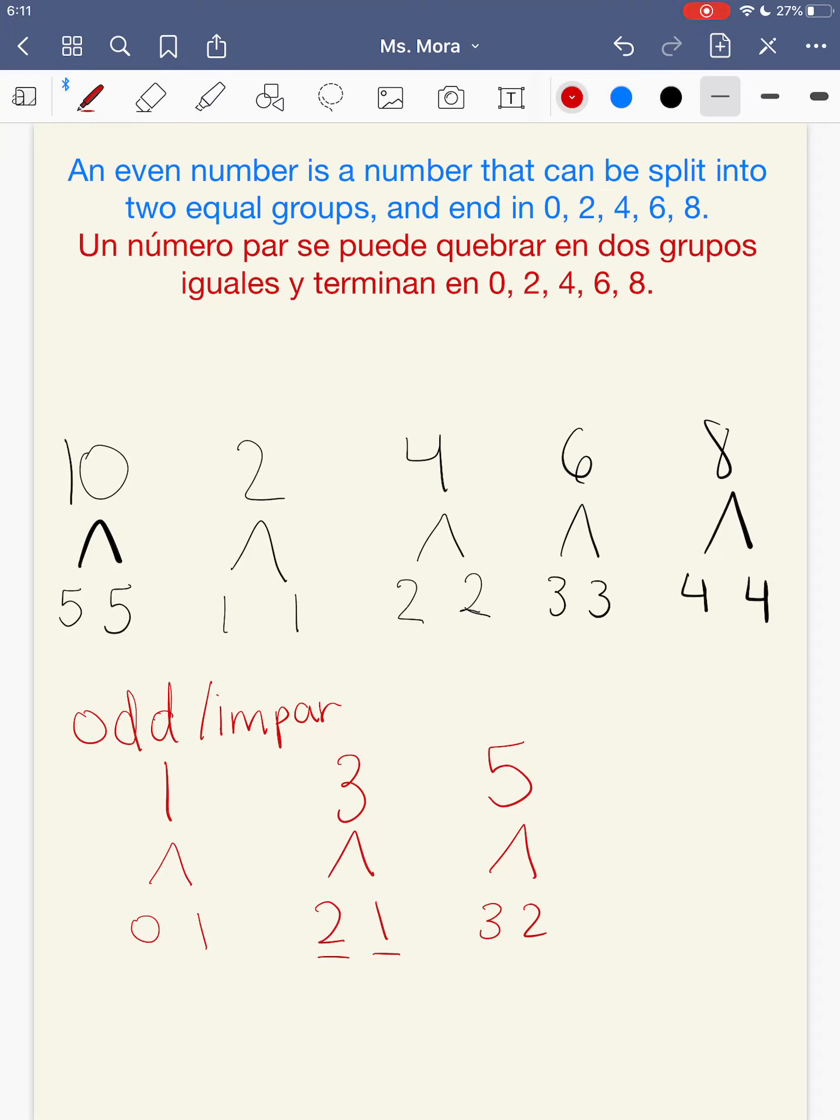And 7, you could add 6 and 1. Those are not equal groups. You could add 5 and 2. Those are not equal groups. You could add 3 and 4. Those are not equal groups. And you could add 0 and 7. Those are not equal groups. So 7 is also odd. 7 también es impar.